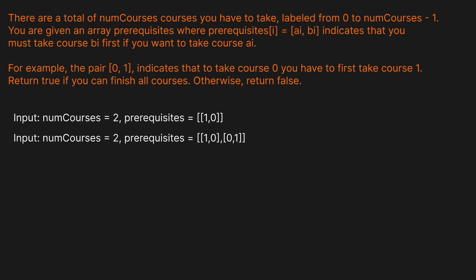There are a total of numCourses you have to take, labeled from zero to numCourses minus one. You're given an array prerequisites where prerequisites[i] equals [a_i, b_i], indicating that you must take course b_i before course a_i. For example, the pair [0, 1] means you have to take course one before course zero. We want to return true if you can finish all courses, otherwise return false.